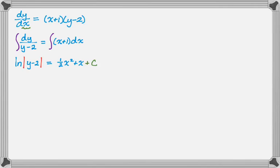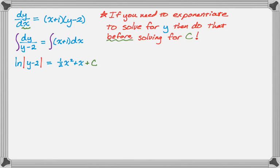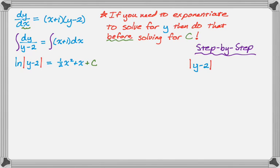My advice: if you're going to need to exponentiate to solve for y — because y is currently inside a natural log — then do that before you solve for C. It'll make your life a whole lot easier. Let me go step by step. First, exponentiate both sides: |y − 2| equals e to the (1/2 x squared + x + C). By properties of exponents, that becomes e to the C times e to the (1/2 x squared + x).